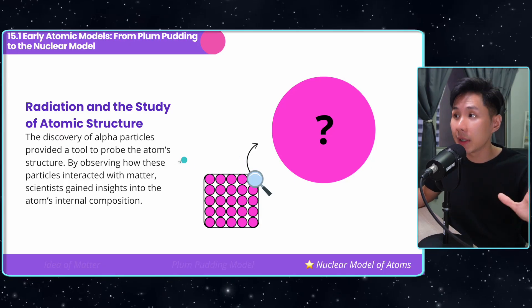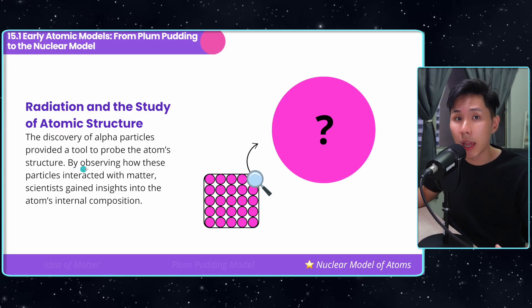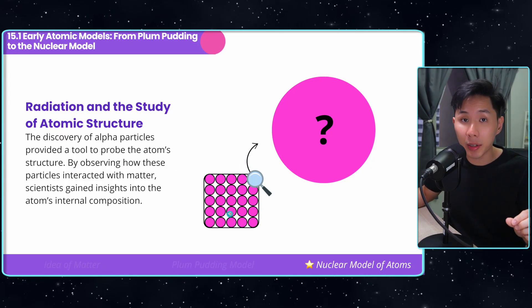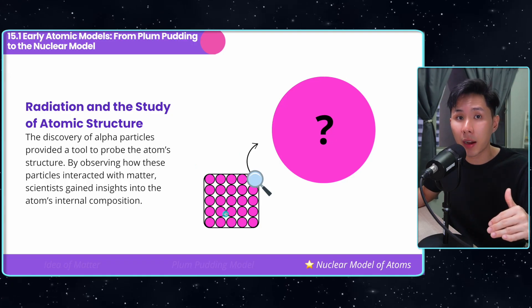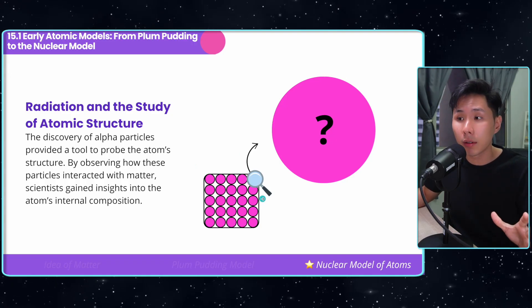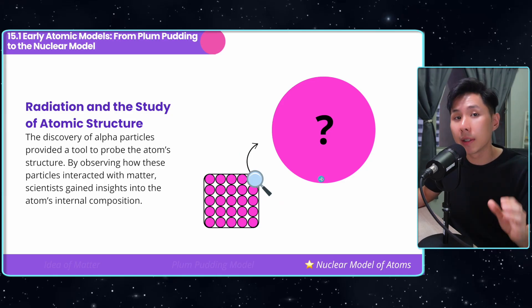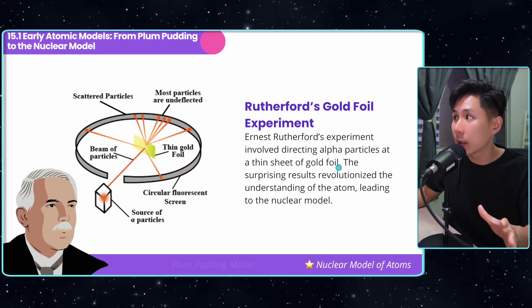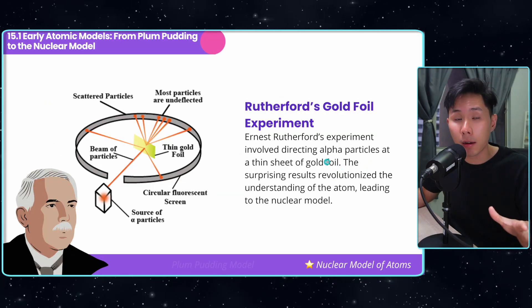He hypothesized that this is how it's going to look like. When alpha particles were discovered, they were used to probe the atom structure. By observing how these little particles interact with the alpha particles, scientists figured out that the Plum-Pudding model is not the correct model, which leads to Ernest Rutherford's experiment.